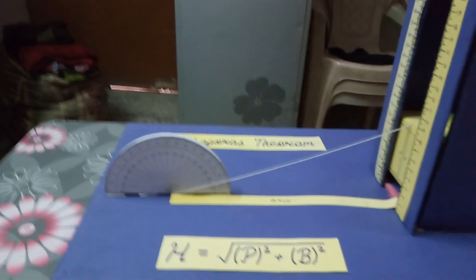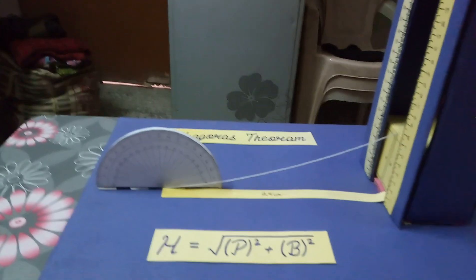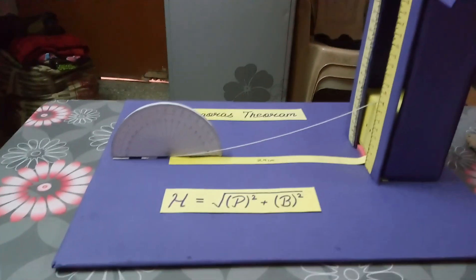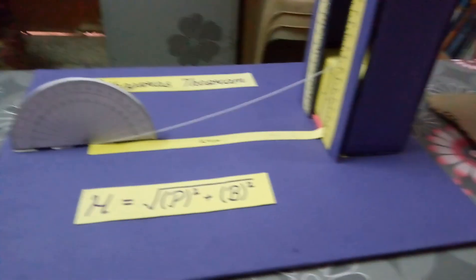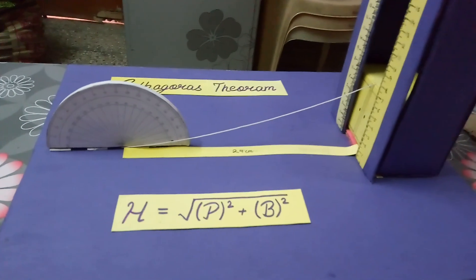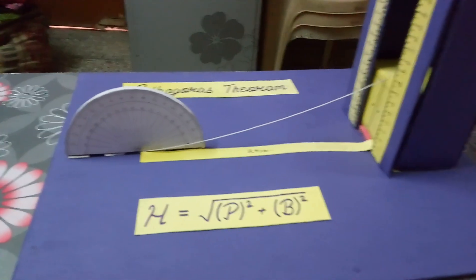When you decrease the height of the lift, the hypotenuse will also decrease. If you want to make the same model, it is quite easy to do so. I will tell you some tricks, some easy tricks to make this model.